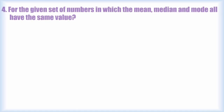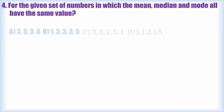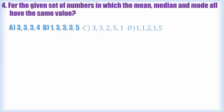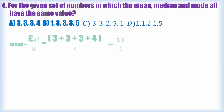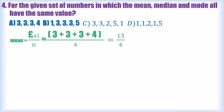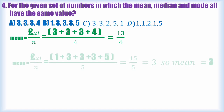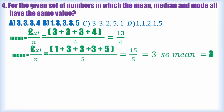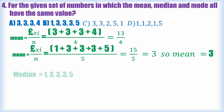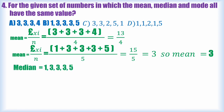Next question: for a given set of numbers, mean, median, and mode all have the same value. Four options are given. Testing option A (3, 3, 3, 3, 4): mean = 13/4, which is a fraction, so it's eliminated. Testing option B (1, 3, 3, 3, 3, 5): mean = 15/5 = 3.